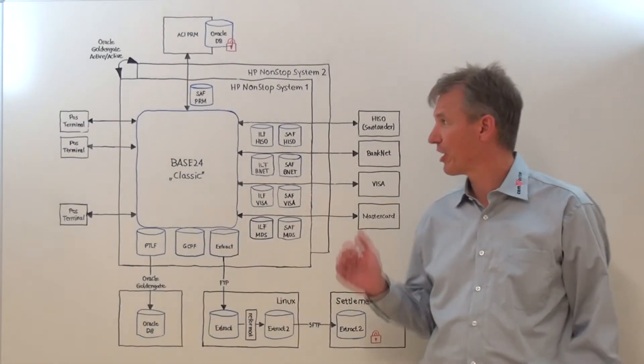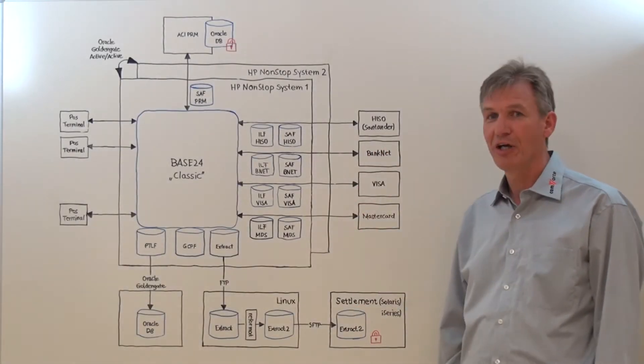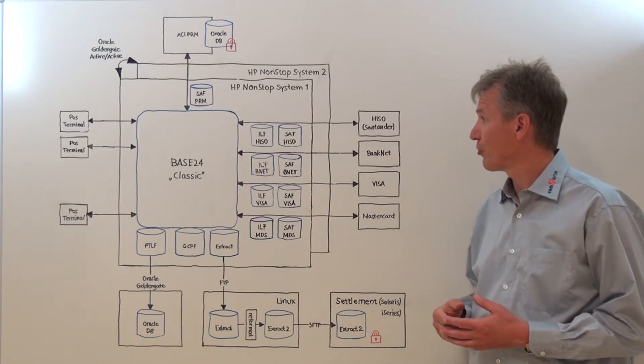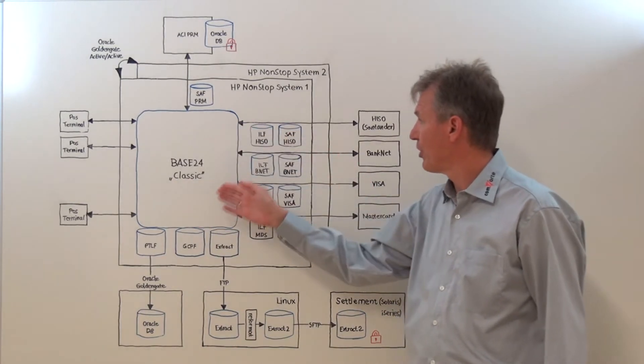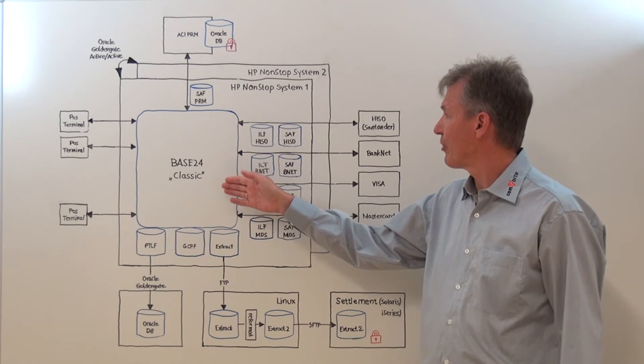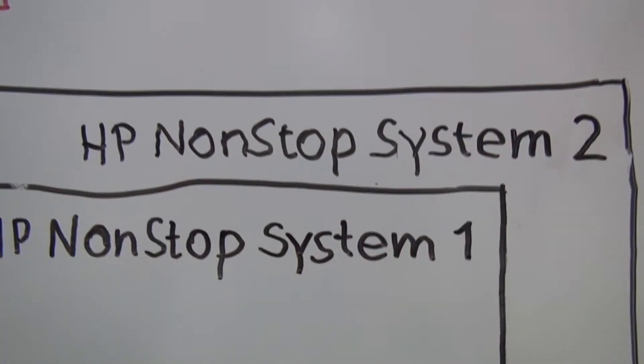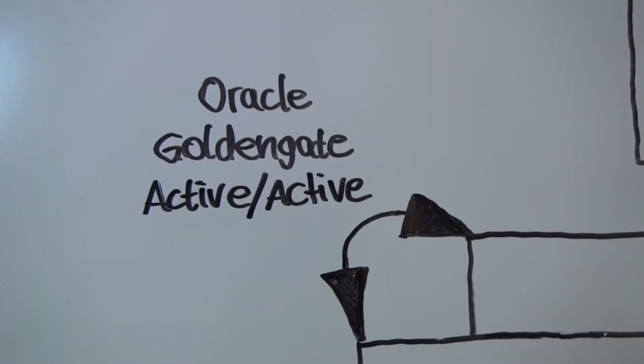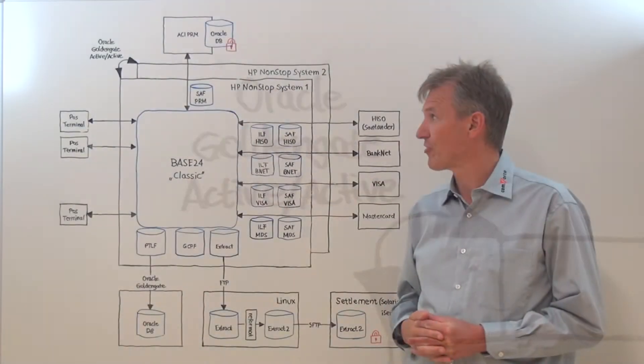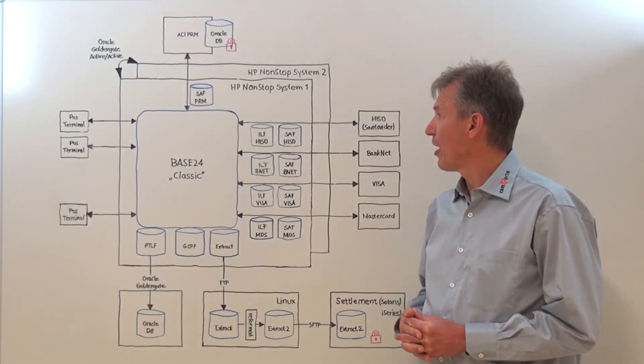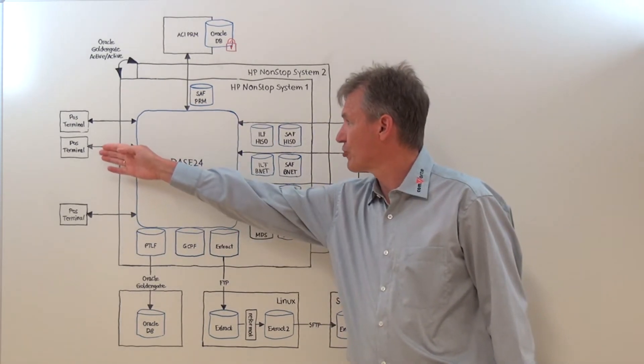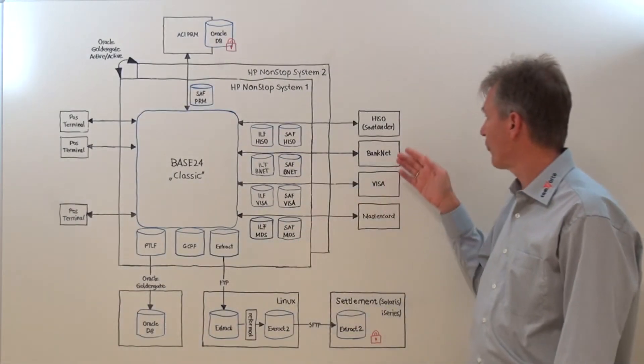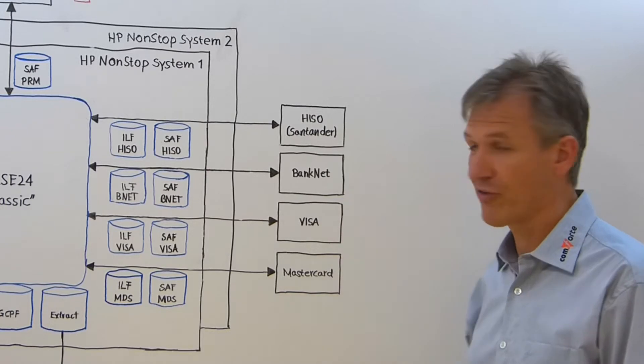Let's start by looking at this sample processing environment. In fact, this diagram reflects an environment as it exists in one of our customer sites. We have BASE24 POS, the classic variant of the BASE24 system installed on a pair of non-stop servers. The two servers are connected via an Oracle GoldenGate active-active disaster recovery interface. And the transactions generated by the POS terminals are routed by BASE24 to the various interfaces like we have here, Visa or MasterCard.